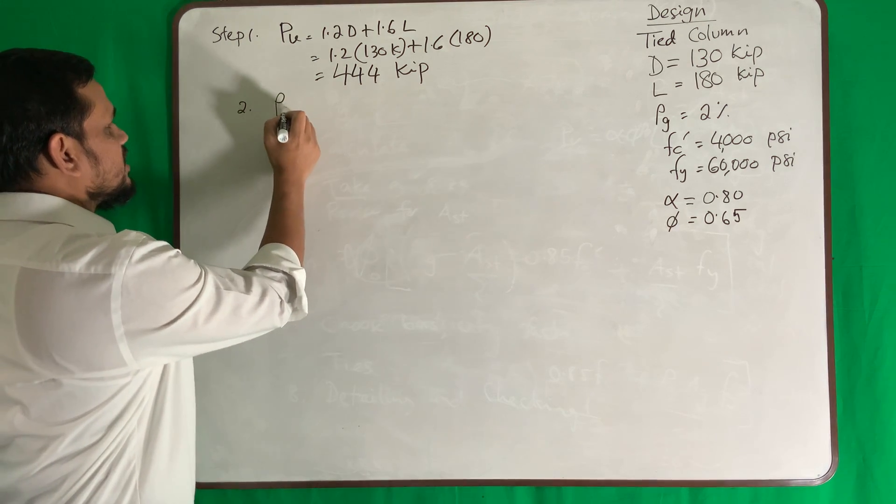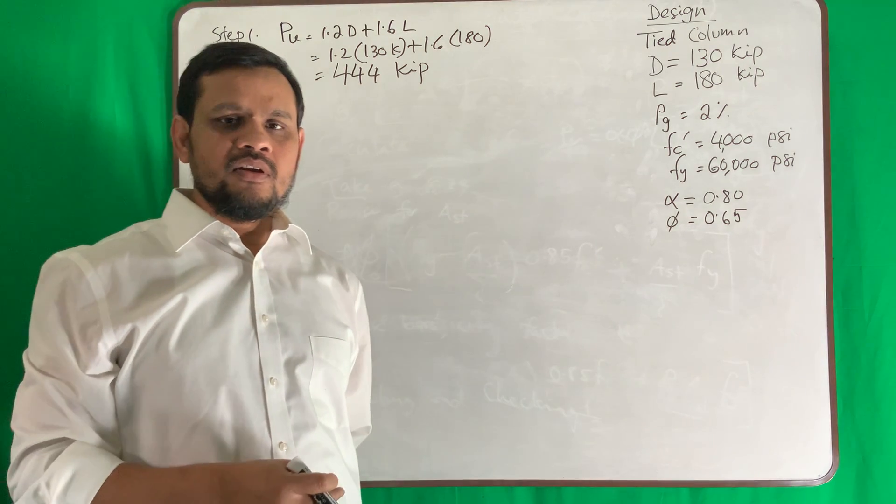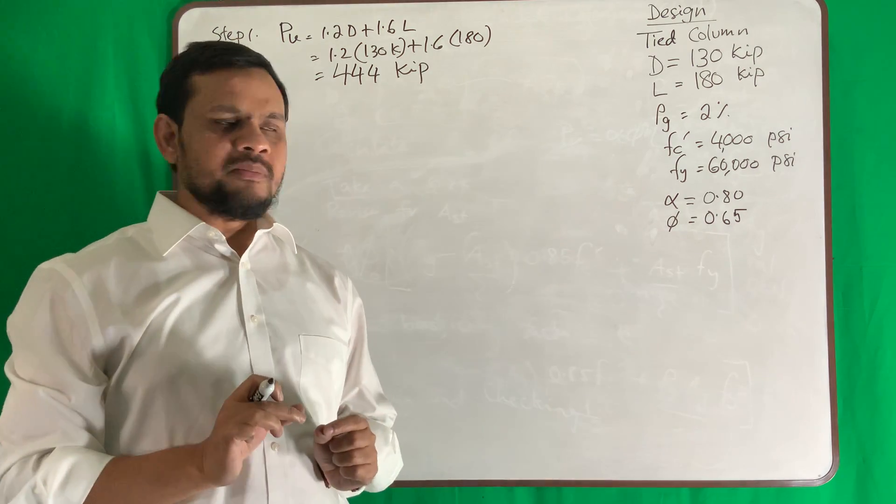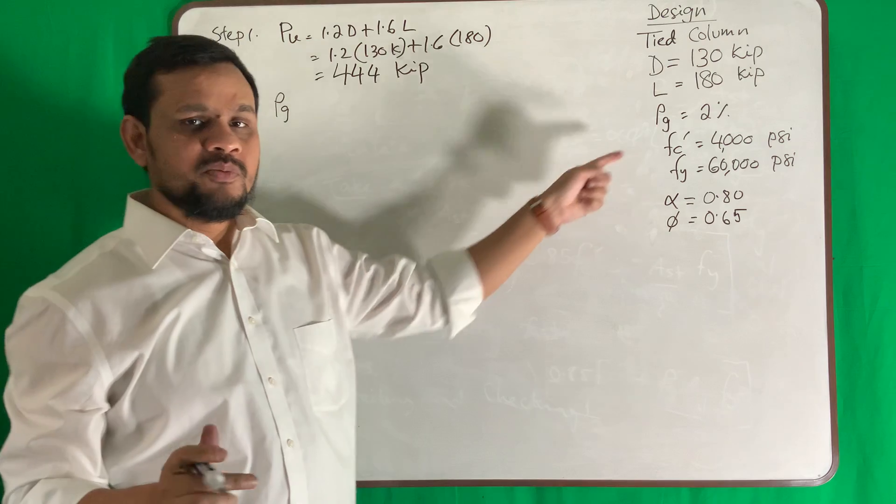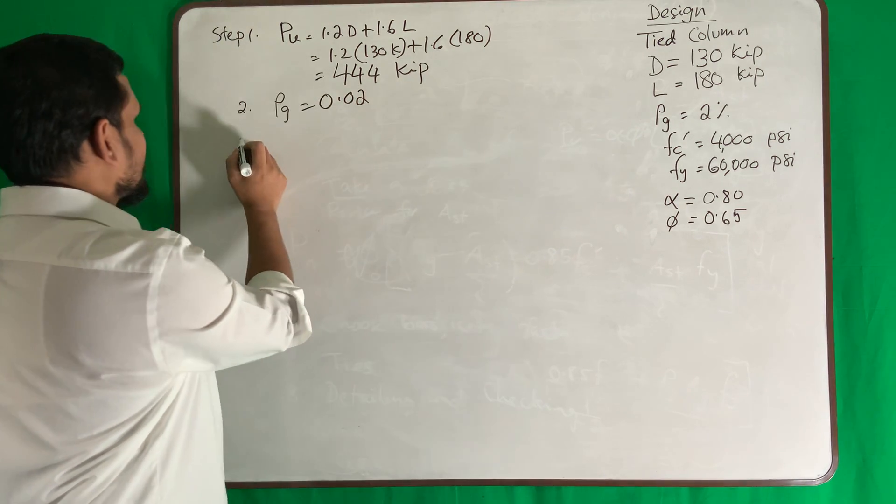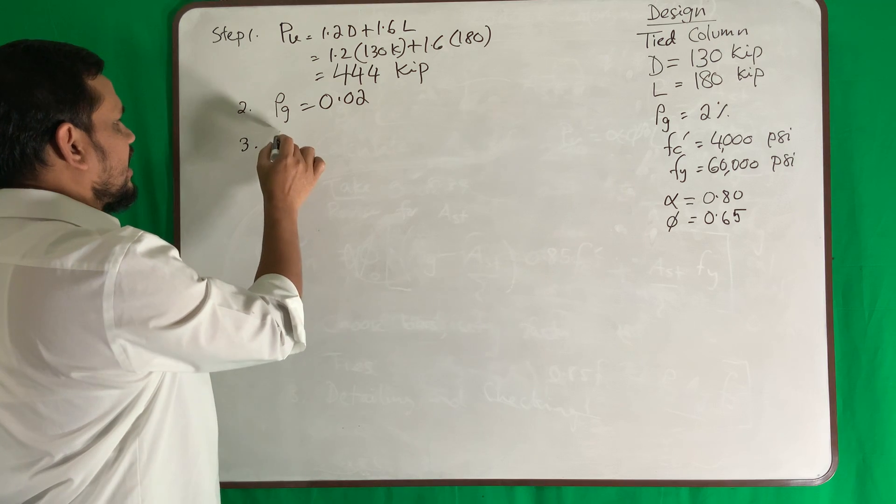So my load is 444 kip. Step number one is done. Step number two, what I will do is ρg. Either assume it - minimum is 1%, maximum 8% - but the problem gave us 2%, so it is 0.02.